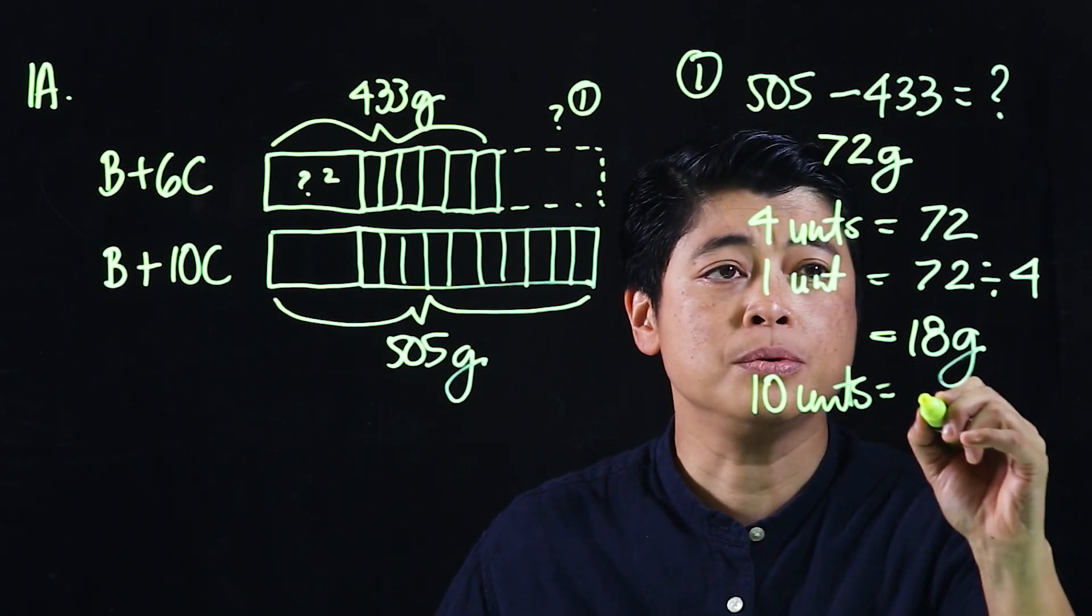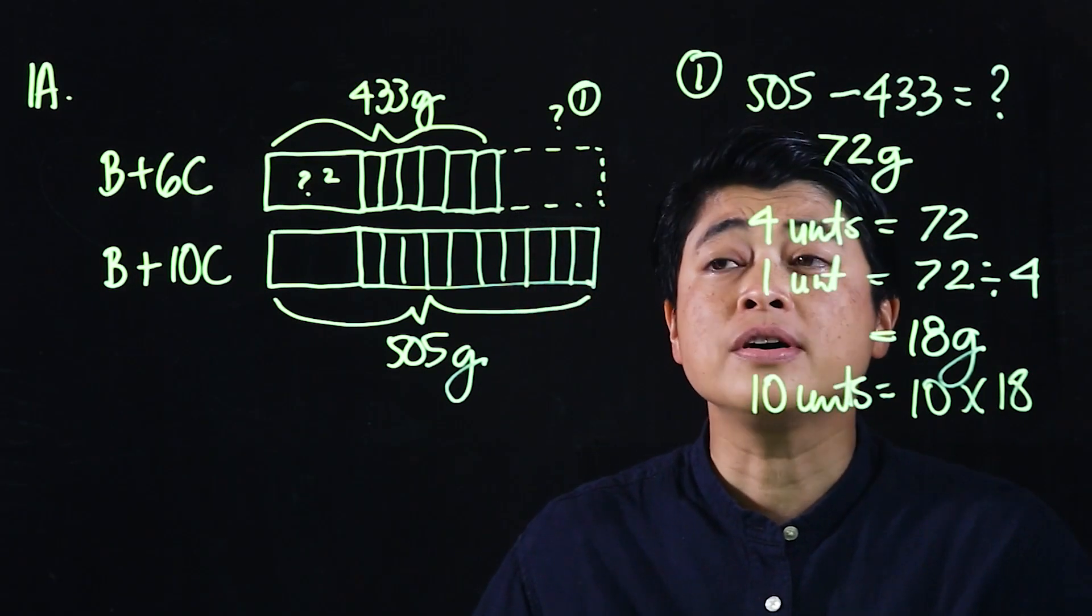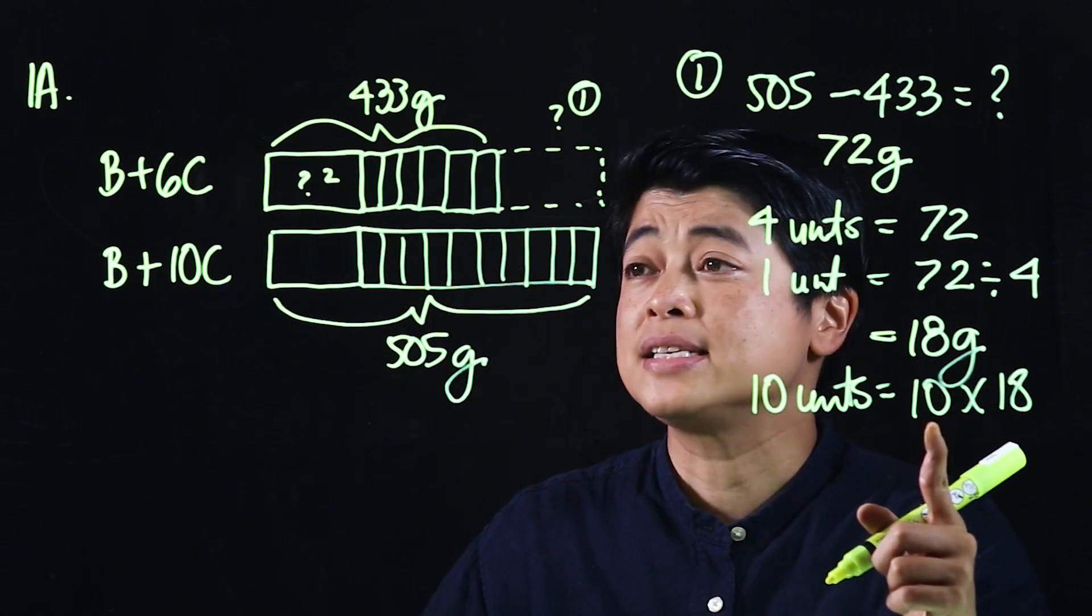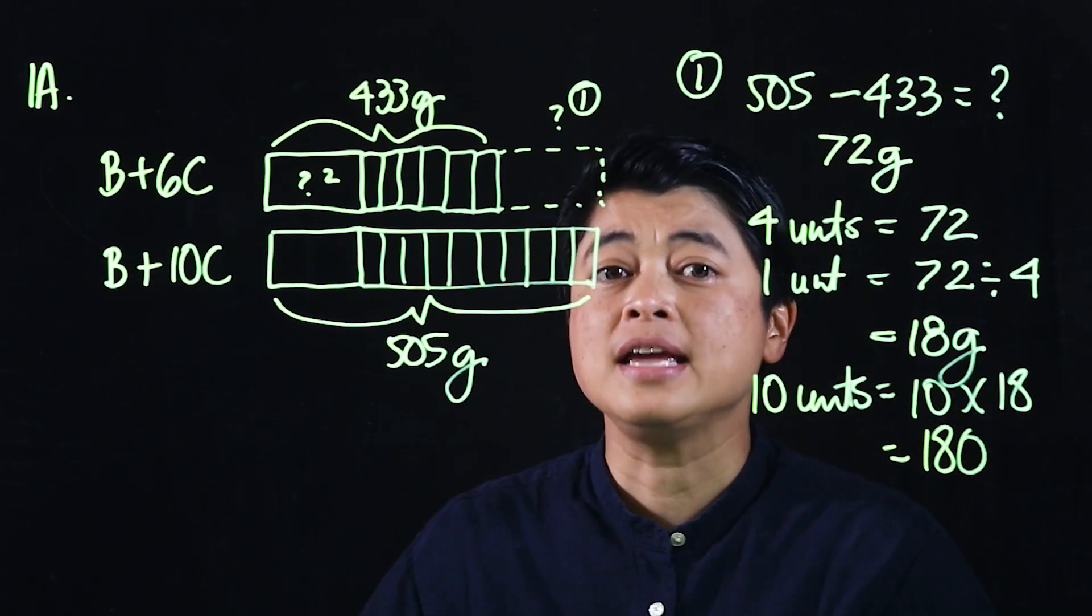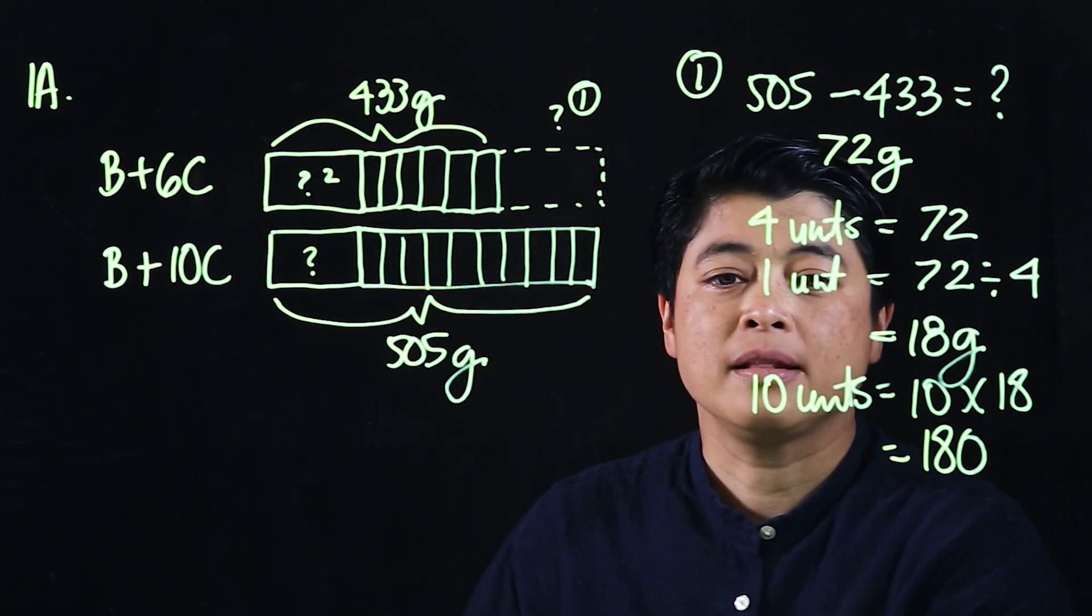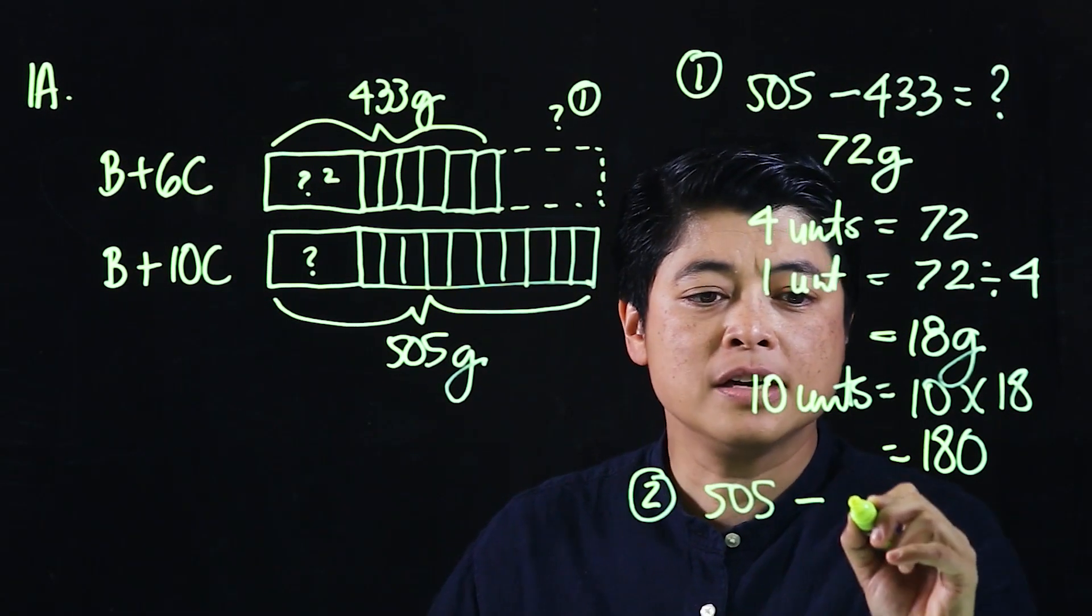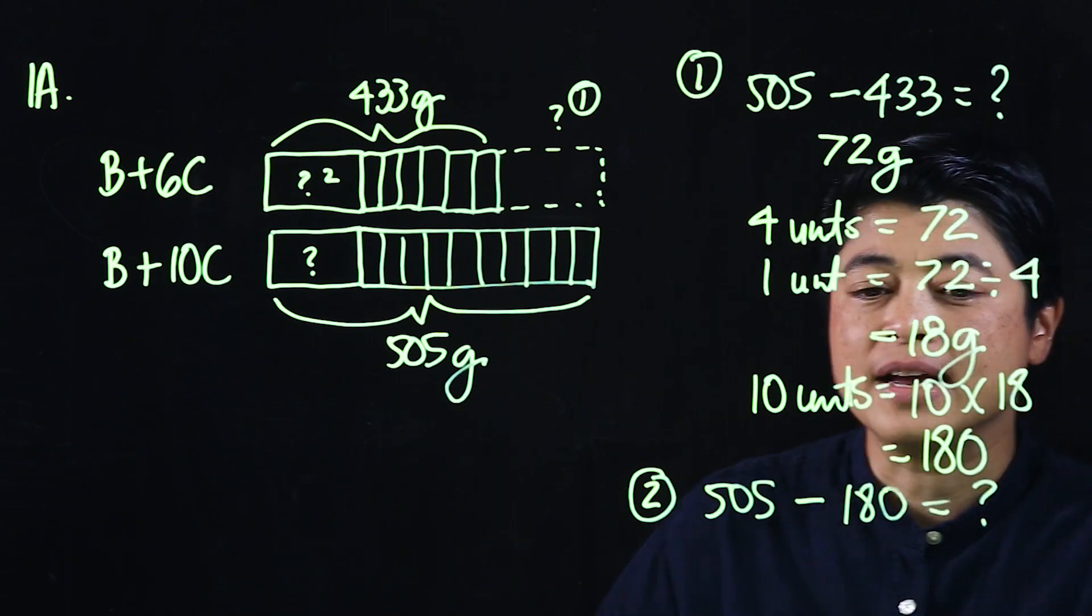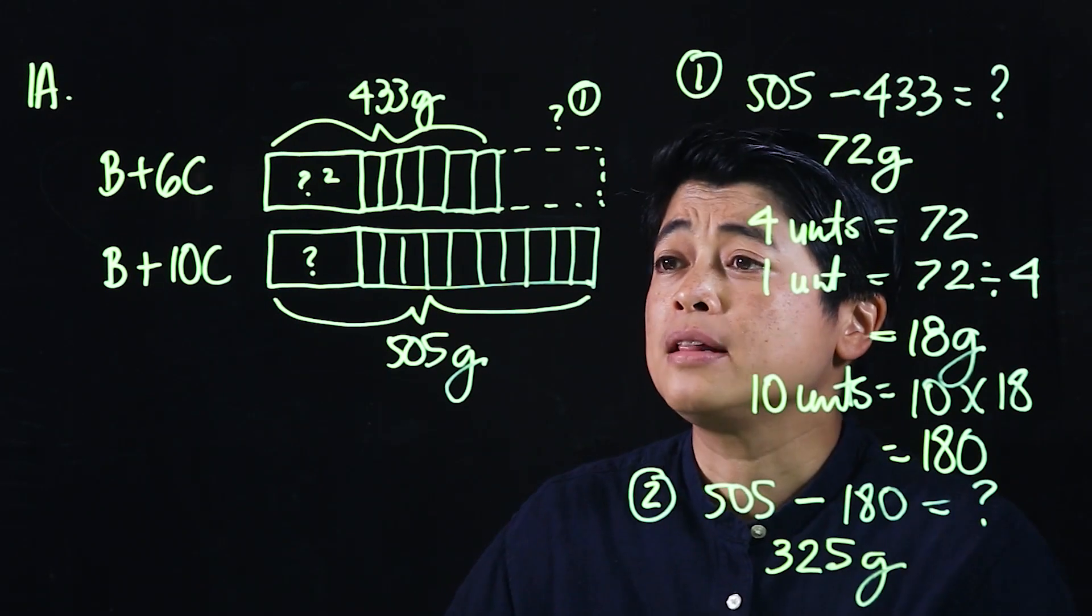They say 10 cookies is equal to 10 times 18. It could have also been six cookies times 18, but the reason they selected this is so that it's easier to multiply. So that means this is 180 grams. Since this and this are the same, that means our step two would be 505 minus 180 equals 325 grams. So with the use of a calculator, we should have gotten that the box is 325 grams.